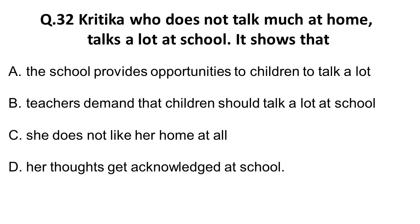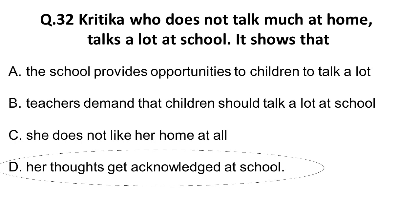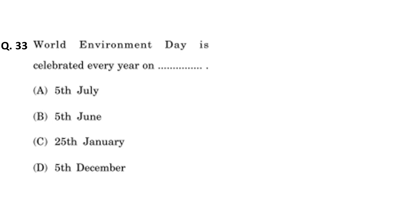The thirty-second question: Kritika, who does not talk much at home, talks a lot at school. What does it show? Options: A) the school provides opportunity to children to talk a lot — cannot be the answer; B) teachers demand that children should talk a lot at school — also cannot be the option; C) she does not like her home at all — cannot be the answer. D) her thoughts are acknowledged at school — this is the answer. Whenever you get acknowledged, you speak up; if suppressed, you won't talk very often. So the correct answer is: her thoughts get acknowledged at school.